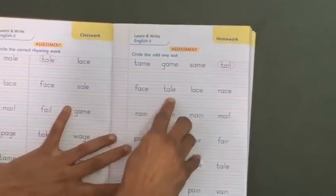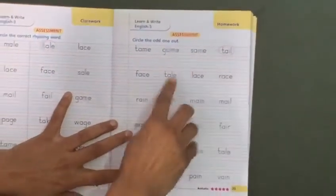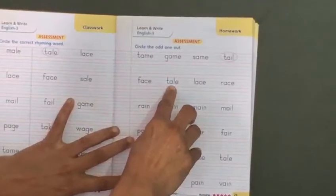Face, face, tail, lace, wrist. Tail is the odd one.